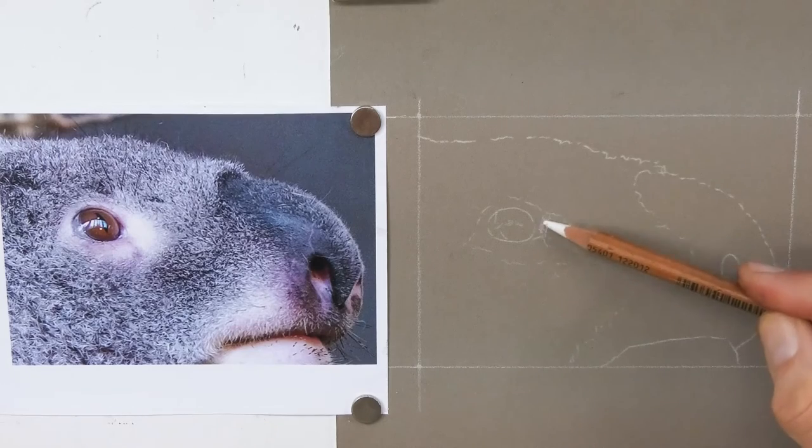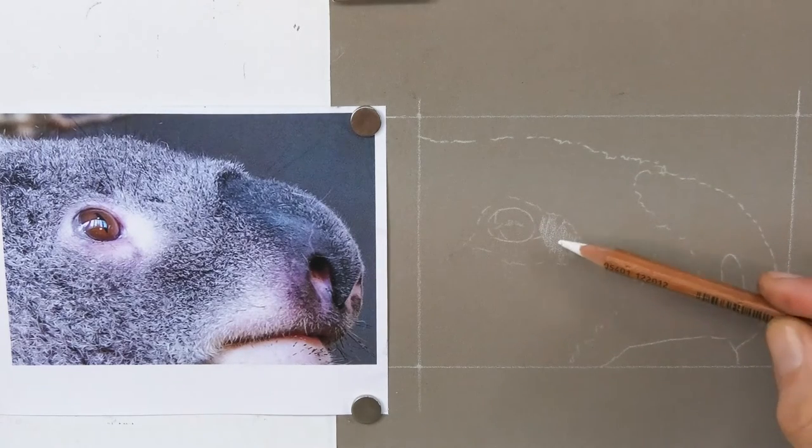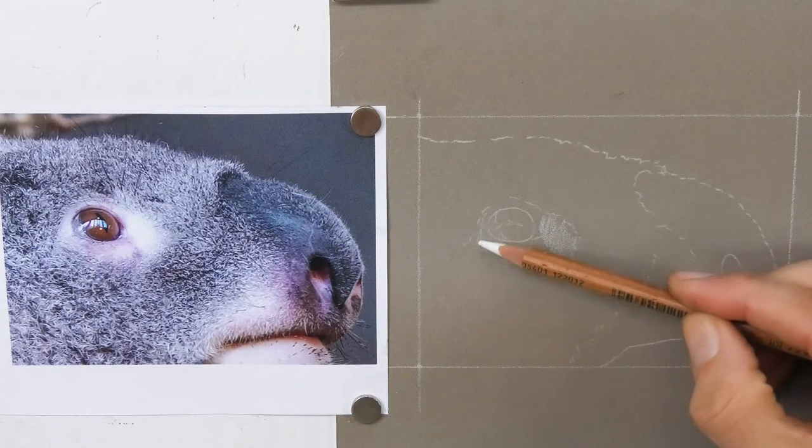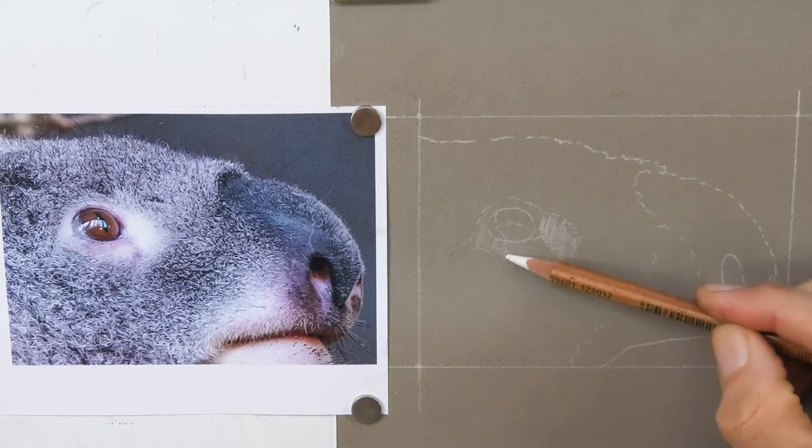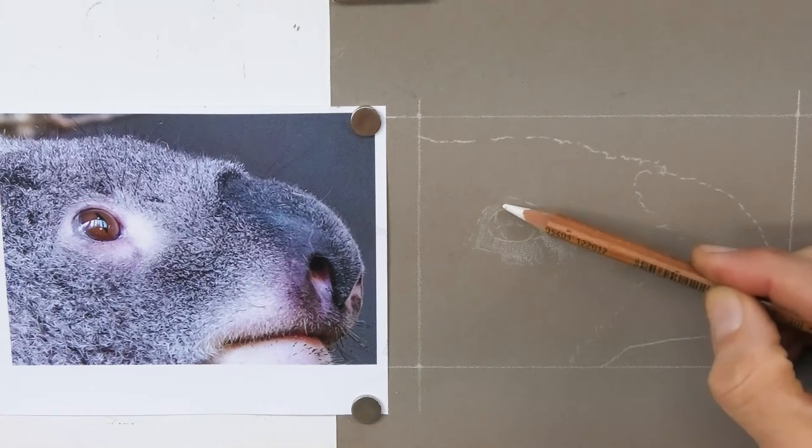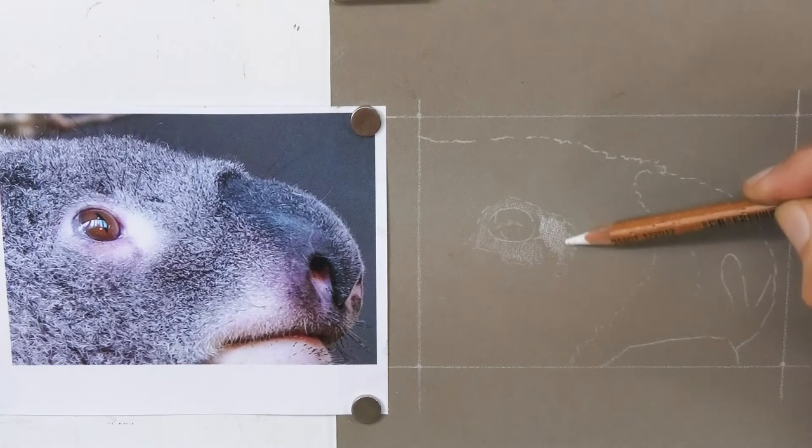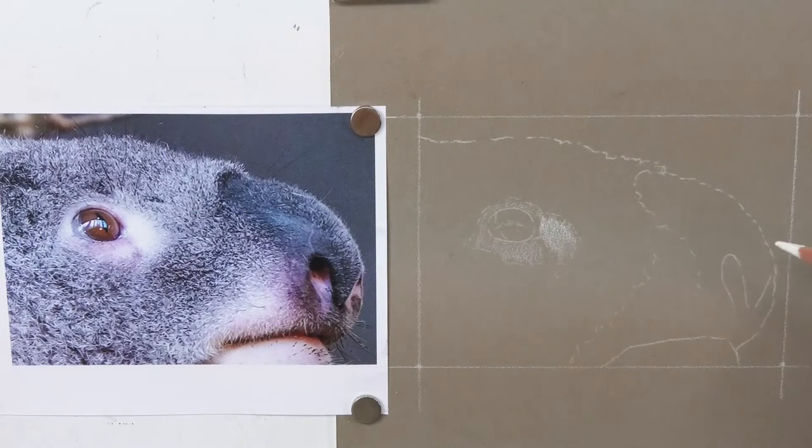I'm using Pastelmat dark grey paper by Clairefontaine. It looks a bit brown on screen—that's just the color coming out strangely. My reference photo is on the left, just a part of it. I got this lovely image from wildlife reference photos dot com, and I'll put a link to that.